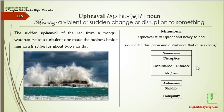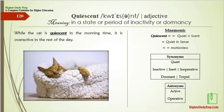The synonyms of upheaval are disruption, disturbance, disorder, or mayhem. The antonyms are stability or tranquility. Quiescent means in a state or period of inactivity or dormancy. Mnemonic: quiescent — quiet, incense, or motionless. While the cat is quiescent in the morning, it is overactive for the rest of the day. The synonyms are quiet, inactive, inert, dormant, torpid, or inoperative.